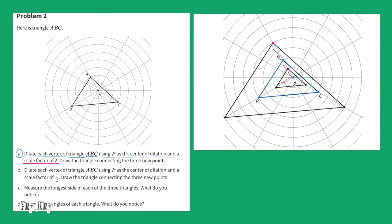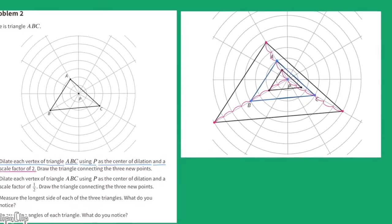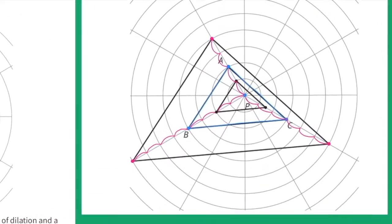Now I'll follow the line from center point P straight through point B. I count four units between center point P and point B. Since there's a scale factor of two, I multiply four times two for a total of eight units. The new point will be eight units away from center point P. Now I'll do the same with point C. Moving from center point P straight through point C, point C is three units away. With the scale factor of two, I double three. Three times two equals six, so the new point for C will be six units away from center point P.